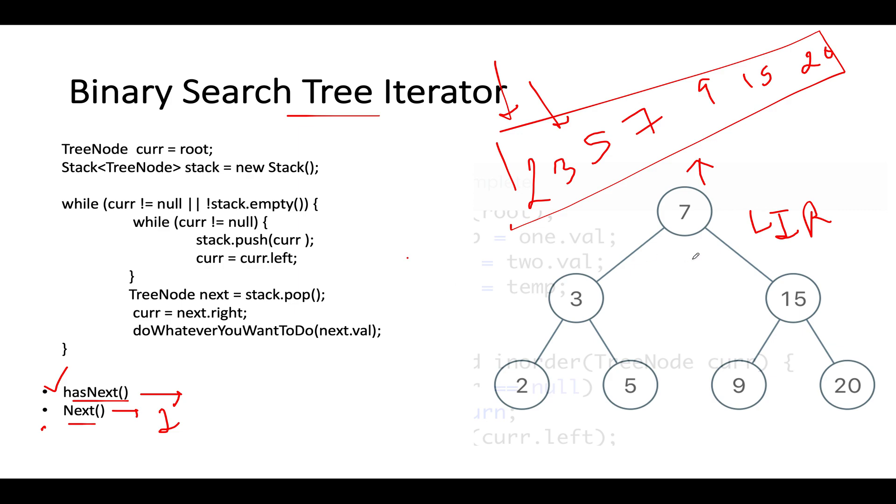However, the time complexity of this approach remains the order of n because you're iterating through the binary search tree only once. However, you are also consuming extra space for casting this entire tree into array format, which again takes the complexity of order of n, which we want to avoid. Can we do it in place? The answer is yes.